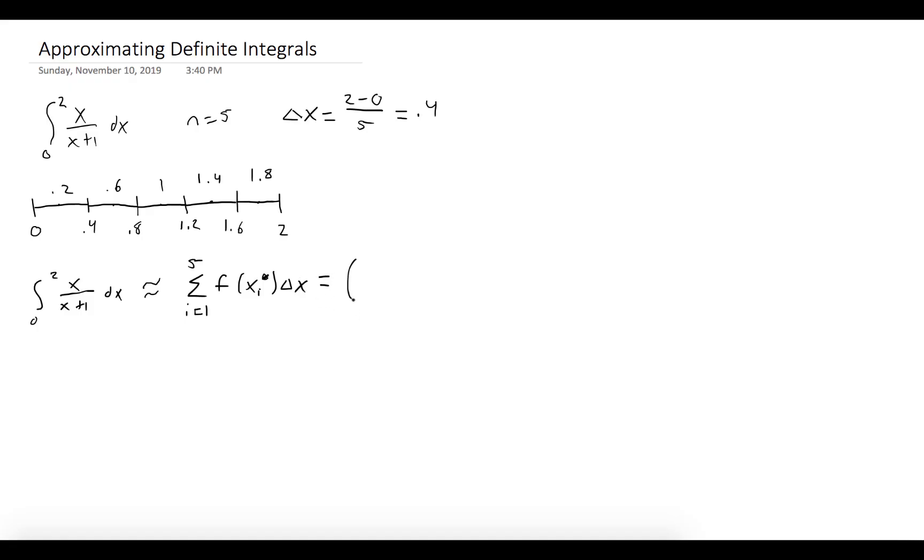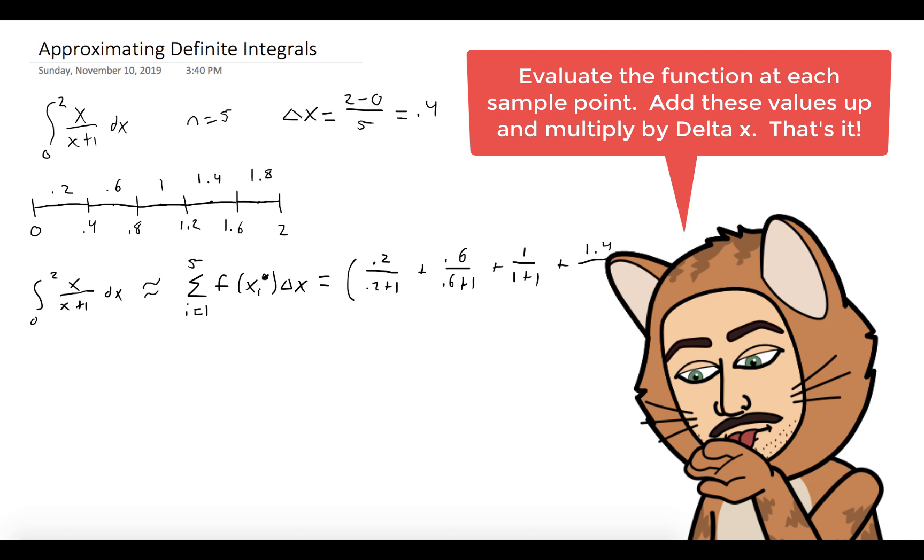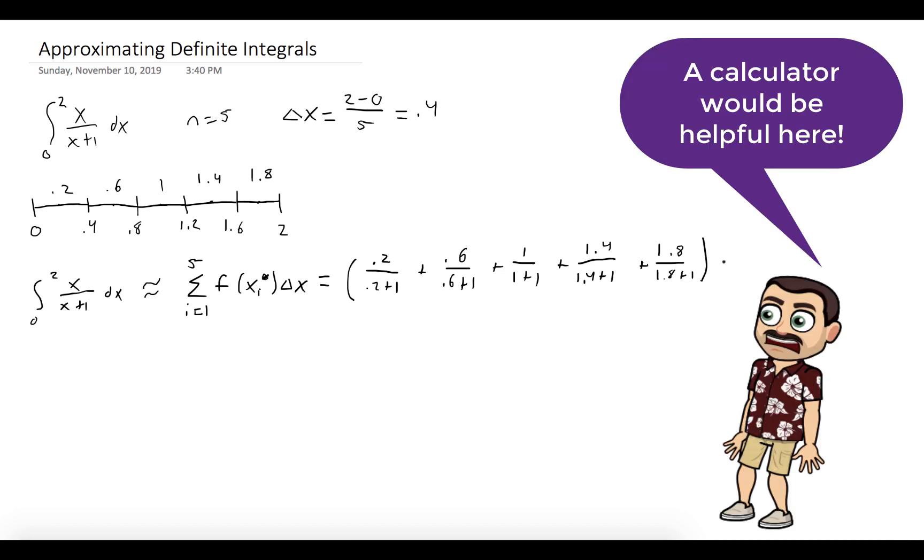So in our case, this is 0.2 over 0.2 plus one plus 0.6 over 0.6 plus one plus one over one plus one and so forth. After we add all of these up, we have to remember, this is very important, we have to remember to multiply by delta x. If we don't, we're not going to get the right answer. That's the width of each of our rectangles.